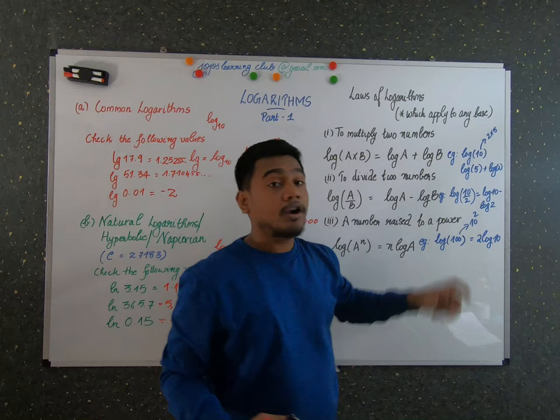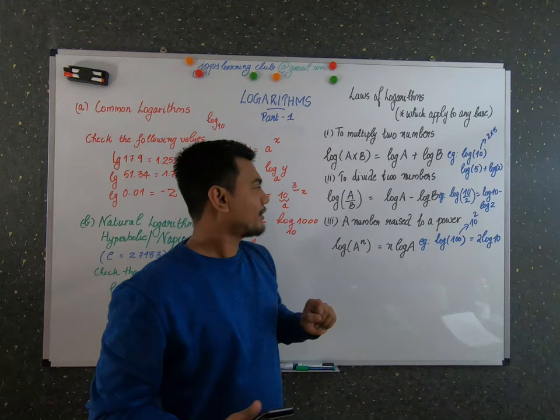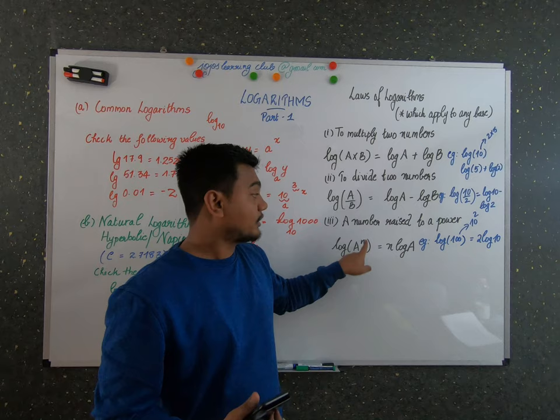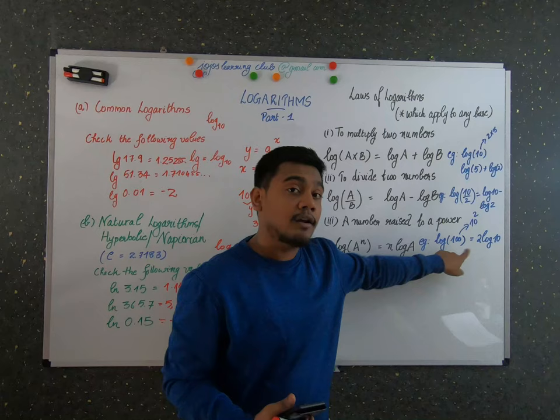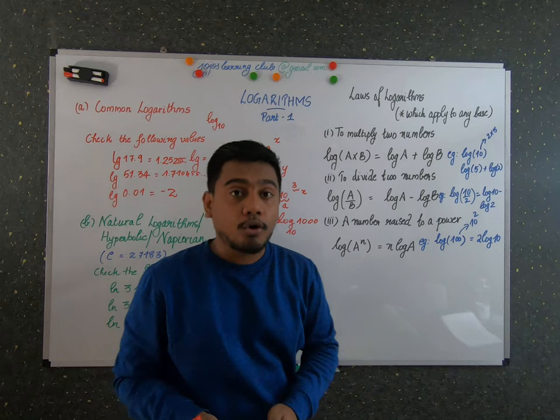For example, log of 10 divided by 2 — which is log 5 — equals log 10 minus log 2. Third, if a number is raised to a power: log of A raised to N equals N times log A. For example, log of 100, which is 10 squared, equals 2 times log 10.